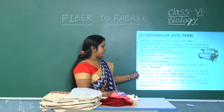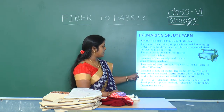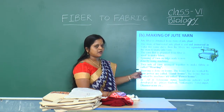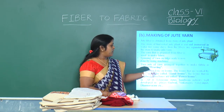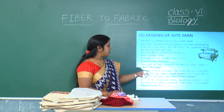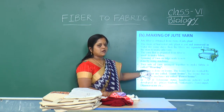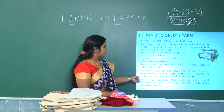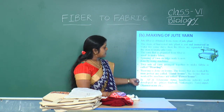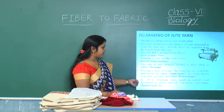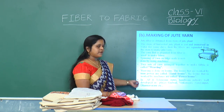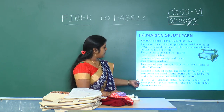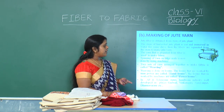Two sets of yarn arranged together to make fabric is called weaving. Weaving is done on looms. Looms worked by manpower are called hand looms, and looms worked by machines are called power looms. In Andhra Pradesh and Telangana, the hand loom industry is well developed in places like Gadwal, Venkatagiri, Narayanapet, Dharmavaram, Mangalagiri, Kothakota, etc.